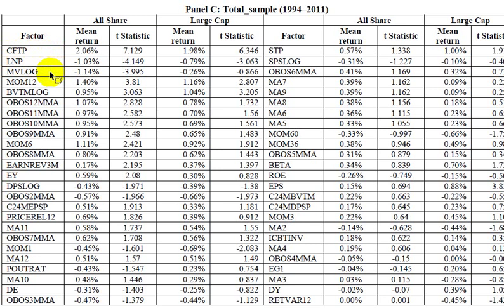Next are size-related factors — market value and price — where as noted in prior studies, smaller cap companies earn higher returns, which is why these are negative. We also have momentum factors, including overbought and oversold momentum, showing about 1% excess return consistent with prior studies. Another value factor, book value to market, also shows about 1% extra return.